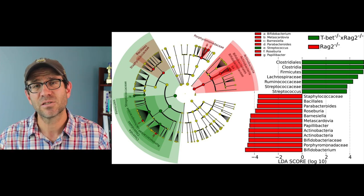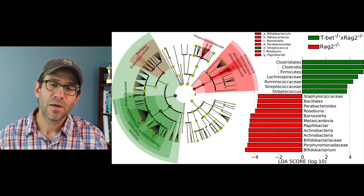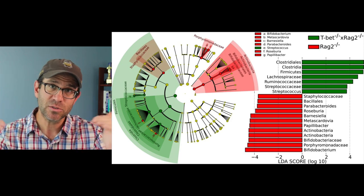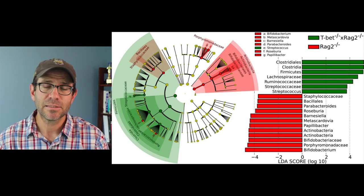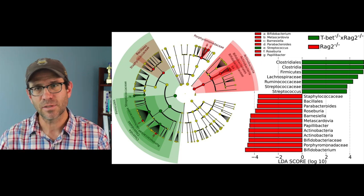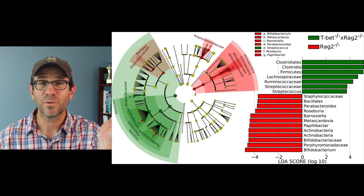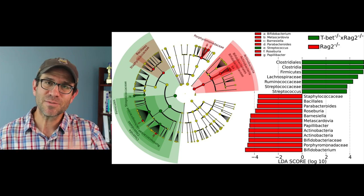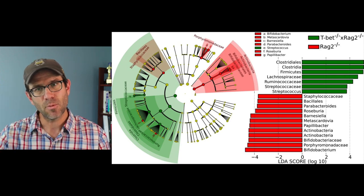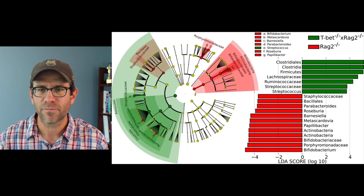This LDA score is a measure of the effect size — how separated are the two different groups based on this one taxonomic grouping. If you have a value more to the right, then that is more associated with TBET RAG knockout or TBET — I don't know what these are, these are mouse genotypes. If it's more to the left, then it's a RAG2 knockout. We can then see that these biomarkers are skewed depending on the type of mice they're coming from.